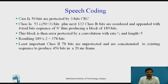Class 1a (50 bits) are protected by 3 CRC (Cyclic Redundancy Check) bits. These 53 bits from Class 1a and 132 bits from Class 1b combine to form a 189-bit block. This 189-bit packet is then error protected by convolution coding at a rate of 0.5 (half rate) and constraint length 5, converting 189 bits into 378 bits. Class 2 (78 bits), the least important, are unprotected and appended to produce 456 bits in 20ms.